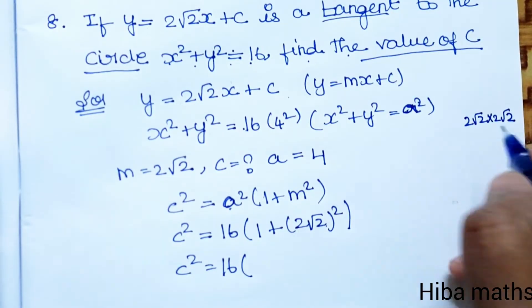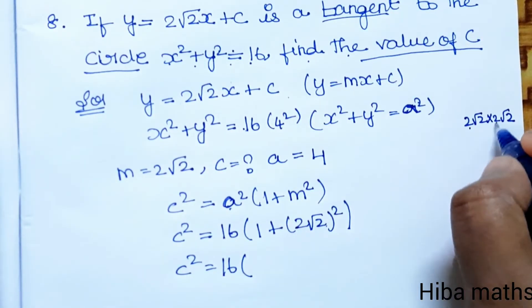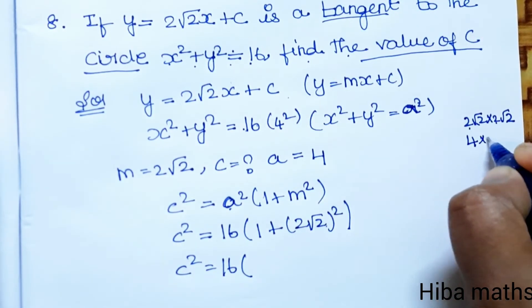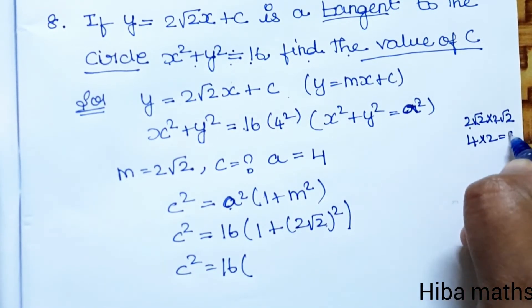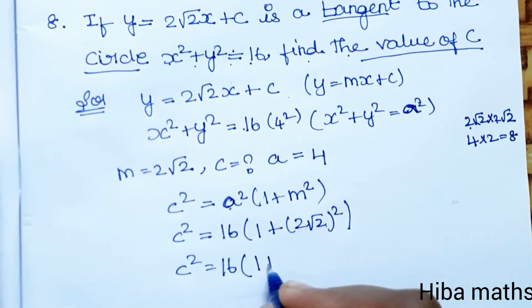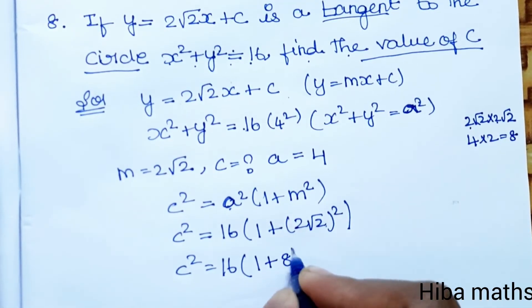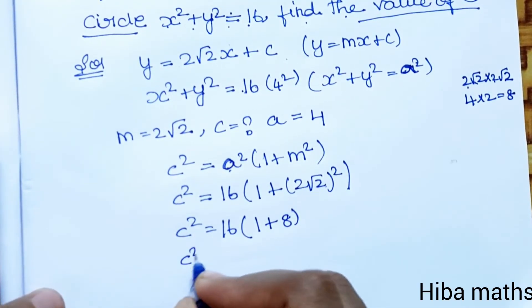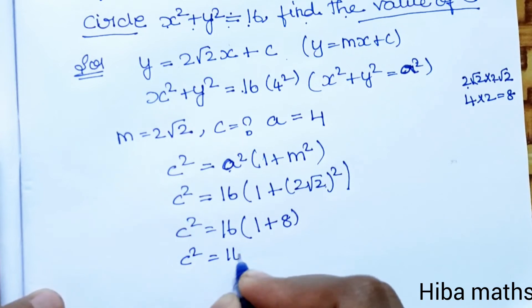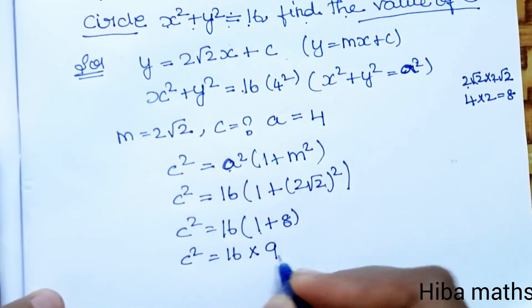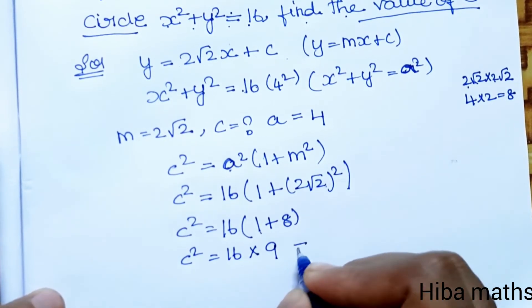Solving: 1 + 8 = 9. Therefore, c² = 16 × 9 = 144.